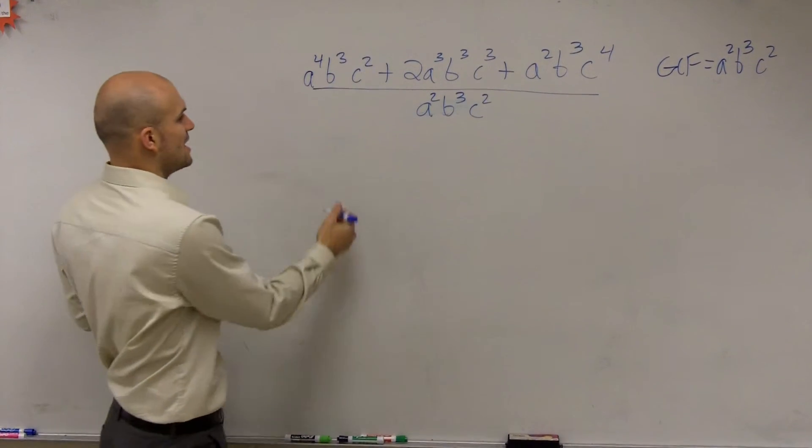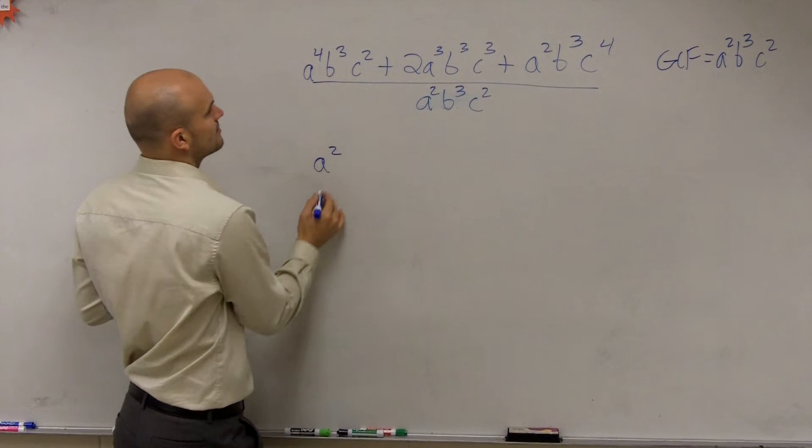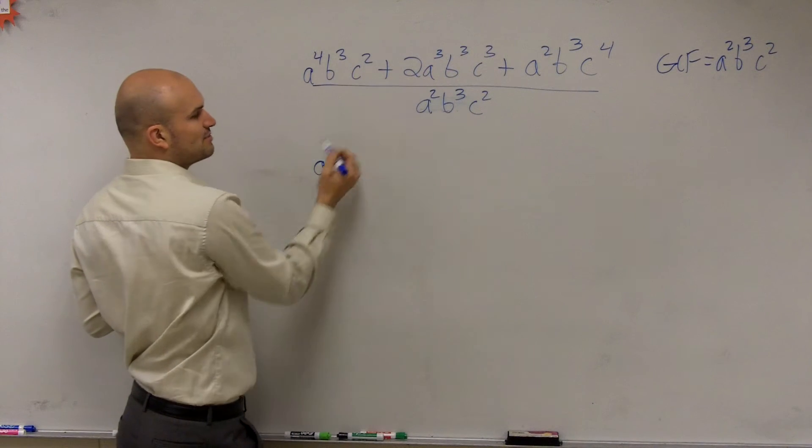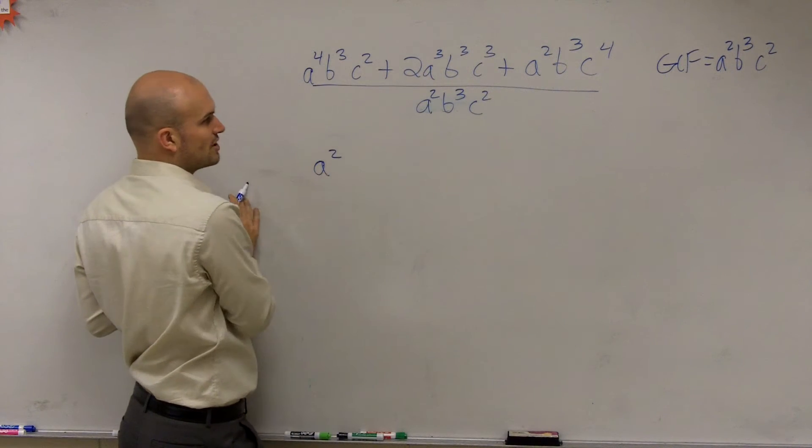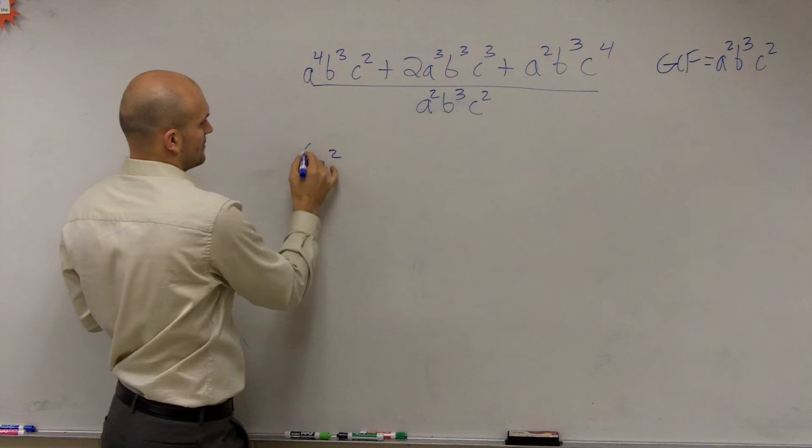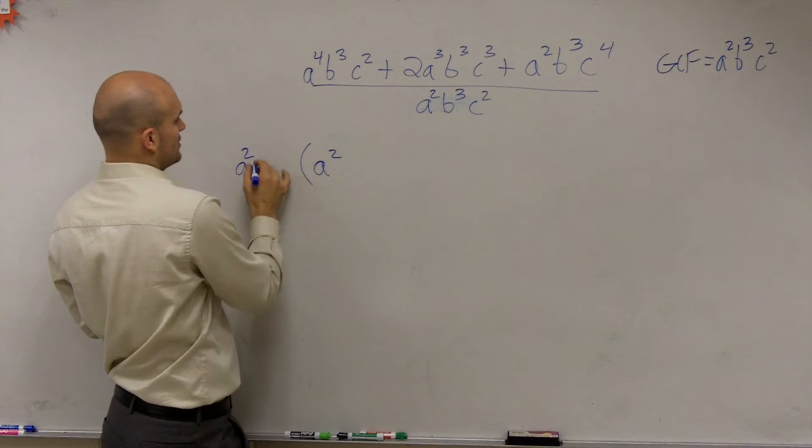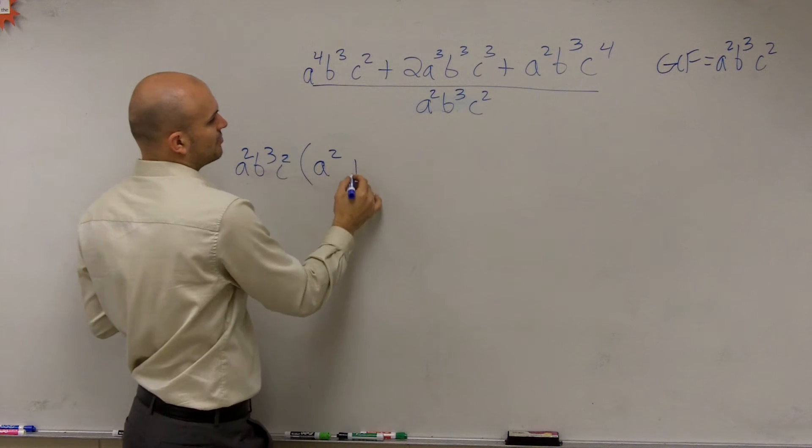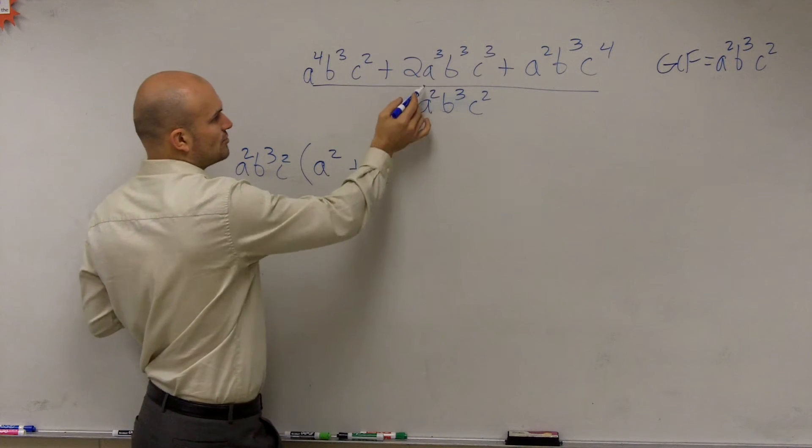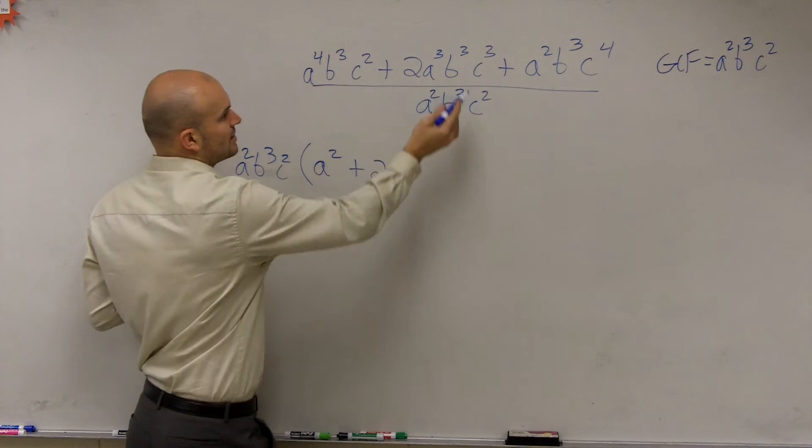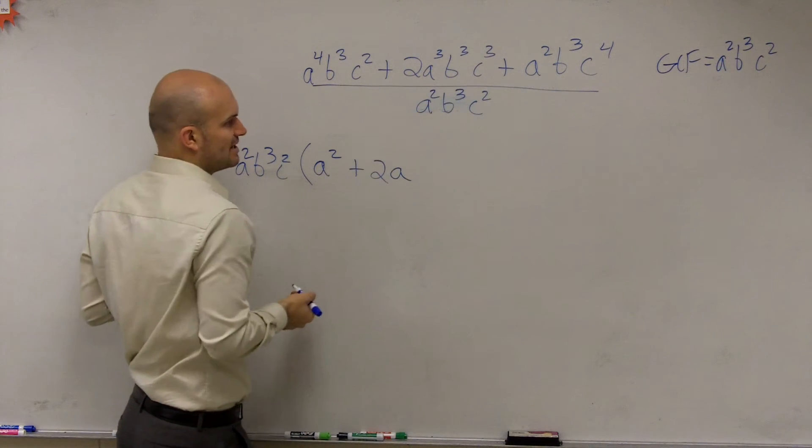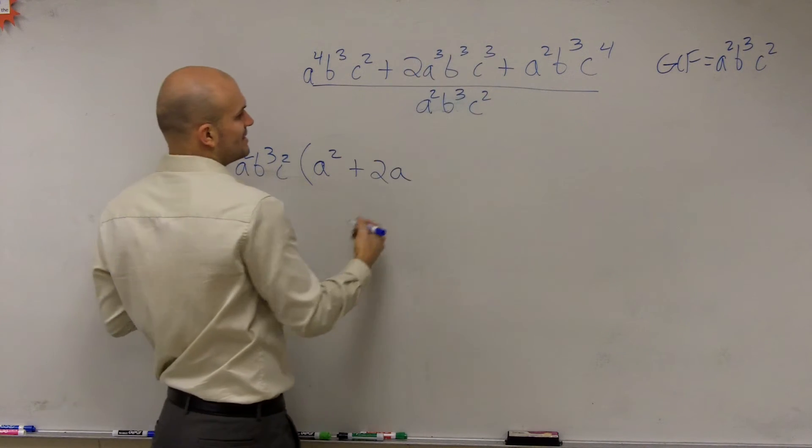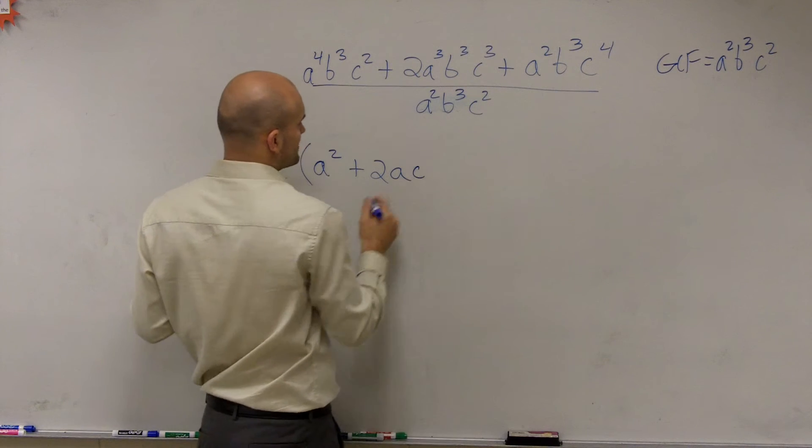By factoring out our GCF, we're going to have a squared. b cubed divided by b cubed is 1, c squared divided by c squared is 1. Then we have plus 2 - a cubed divided by a squared is a, b cubed divided by b cubed is 1, and c cubed divided by c squared leaves us with c.